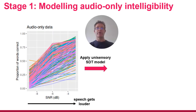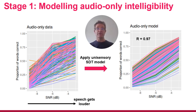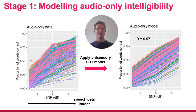Our first job is to apply this method to auditory-only conditions. On the horizontal axis is signal-to-noise ratio, on the vertical axis is the proportion of words correct, and each line is a separate participant — you can see they get better with signal-to-noise ratio. We build a signal detection regression model of this and can indeed predict quite accurately the performance of every single participant in every condition.